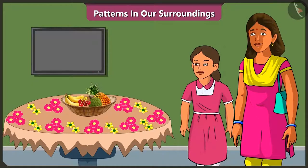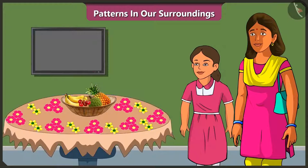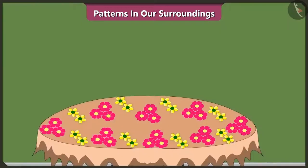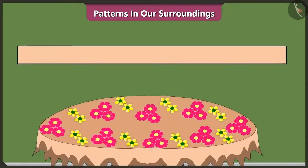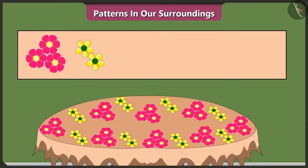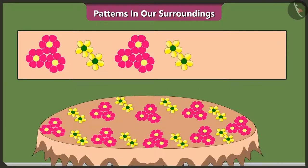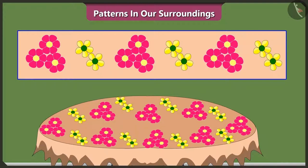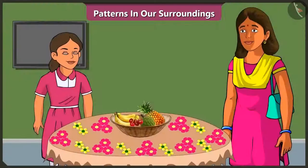Mommy, our tablecloth also has a pattern. Did you notice? Vinny, what is the pattern of this cloth? It has three flowers, then two flowers, then again three flowers, two flowers, three flowers, two flowers. It gets repeated and that's how this pattern is created. Well done, Vinny. Very good.